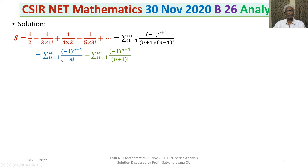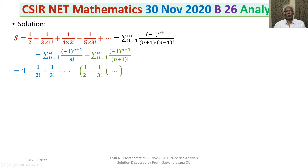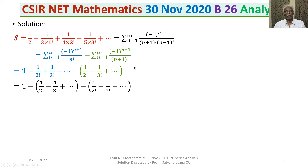Expanding: n equals 1 gives 1 over 1 factorial; n equals 2 gives minus 1 over 2 factorial; n equals 3 gives 1 over 3 factorial, and so on. This equals 1 minus 1 over 2 factorial plus 1 over 3 factorial and so forth, minus the series 1 over 2 factorial minus 1 over 3 factorial and so forth. These are the same series, so adding them gives 1 minus 2 times the series (1 over 2 factorial minus 1 over 3 factorial plus and so forth).